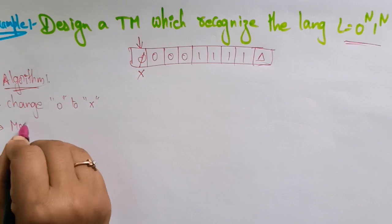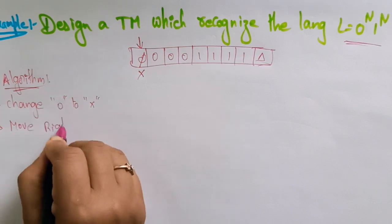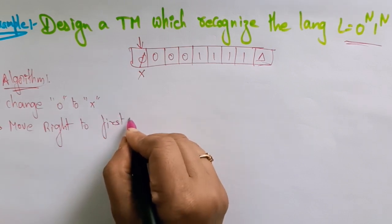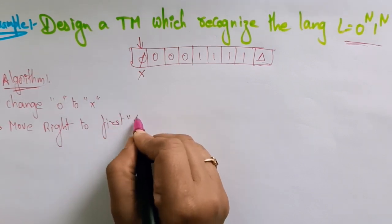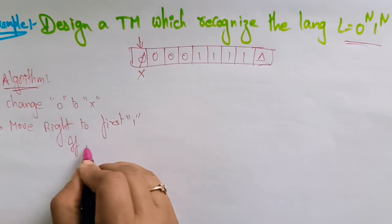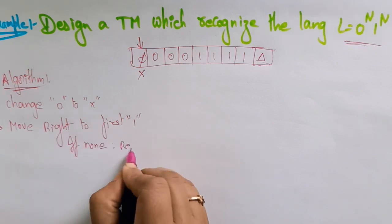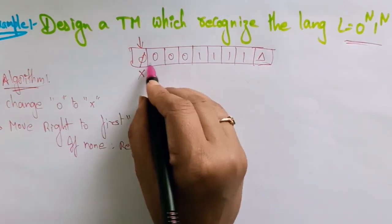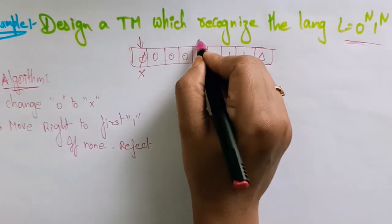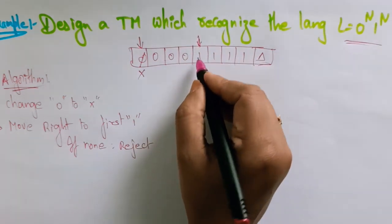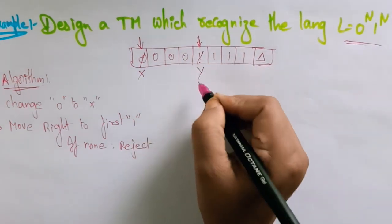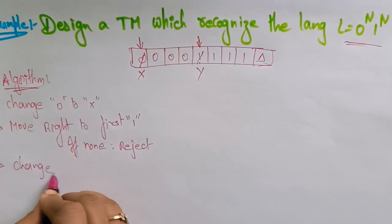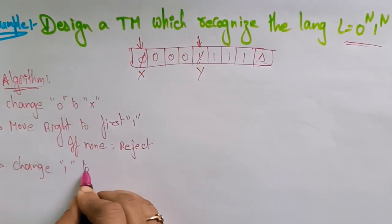Second, move right to the first 1. Move right to find the first 1. If none is found, reject. The head moves right to where the first 1 is — here is the first 1. Now the head moves to this position, and 1 is replaced with y. That is: change 1 to y.